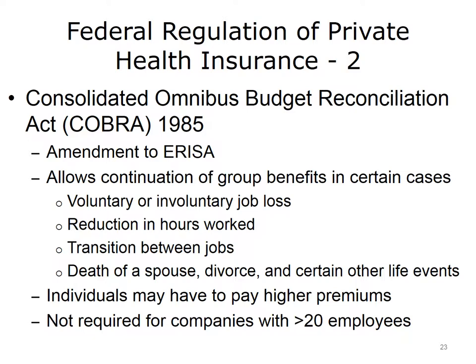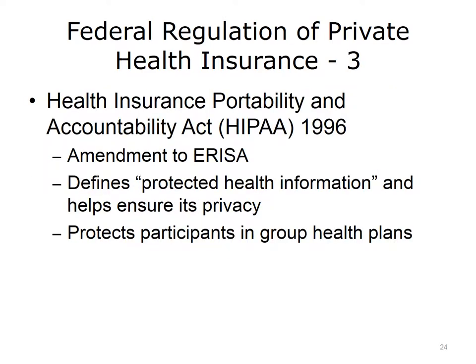COBRA is an amendment to ERISA that allows employees to continue their health care insurance in certain cases, such as voluntarily leaving a job, involuntary job loss, death of a spouse, and divorce. Individuals usually have to pay at least some of the premium themselves, and may even pay slightly more than what the insurance formerly cost. Companies with fewer than 20 employees are not generally required to offer COBRA benefits. Most people are familiar with HIPAA, the Health Insurance Portability and Accountability Act, because of the notices required with visits to a health care provider. The most publicized part of HIPAA protects the privacy of patient information. HIPAA also gives employees and their families access to group insurance regardless of their health status, such as previous claims experience or knowledge of genetic disease.